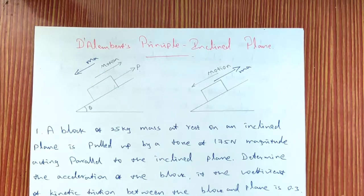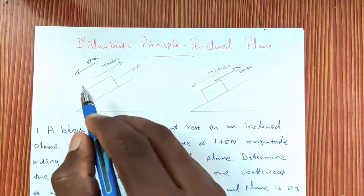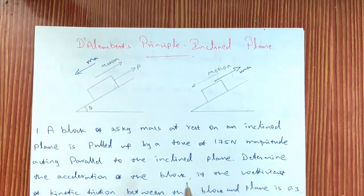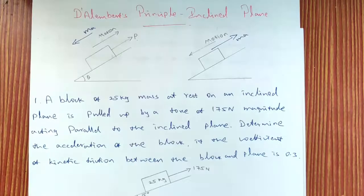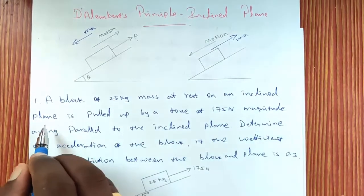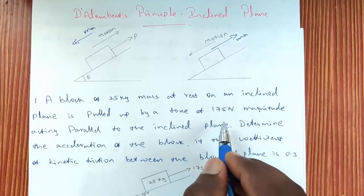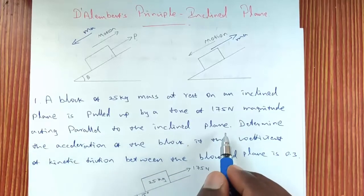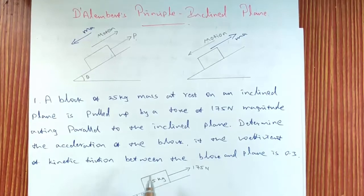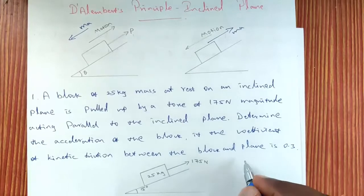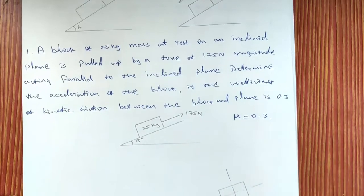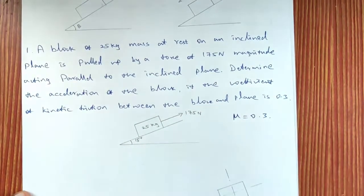When we write the equilibrium equation — summation of horizontal forces — we have to consider ma. In the vertical direction the body is already in equilibrium, so we don't need to consider the inertial force. The first problem: a block of 25 kg mass rests on an inclined plane and is pulled up by a force of 175 Newton acting parallel to the inclined plane. Determine the acceleration of the block if the coefficient of kinetic friction μ = 0.3.